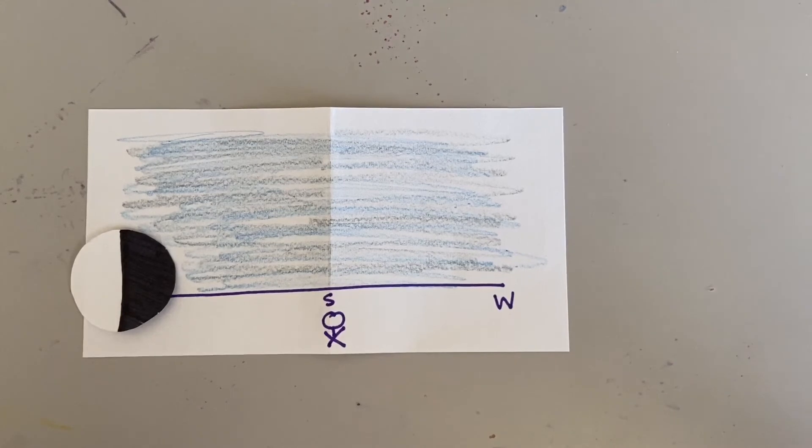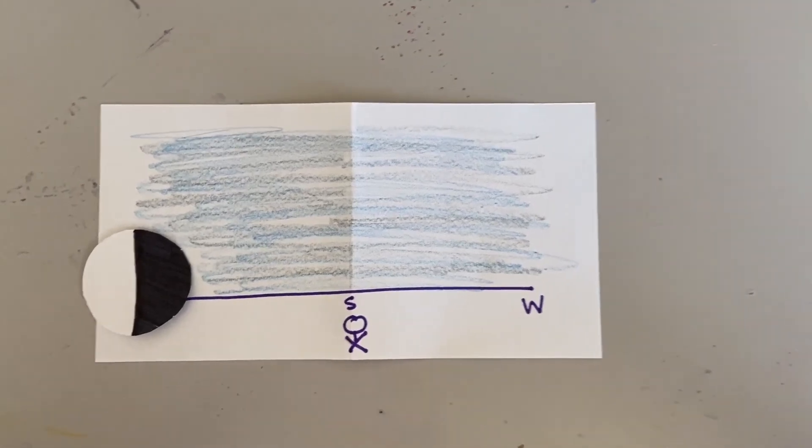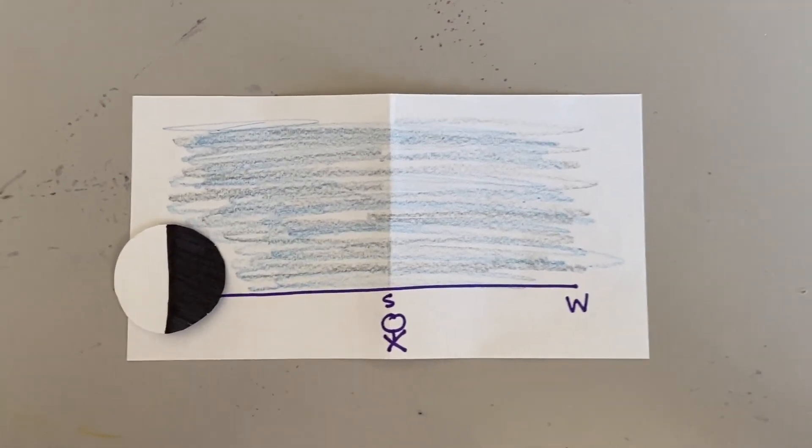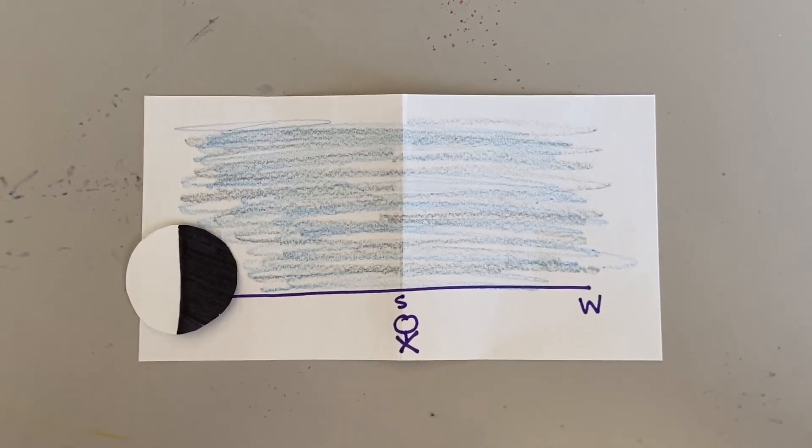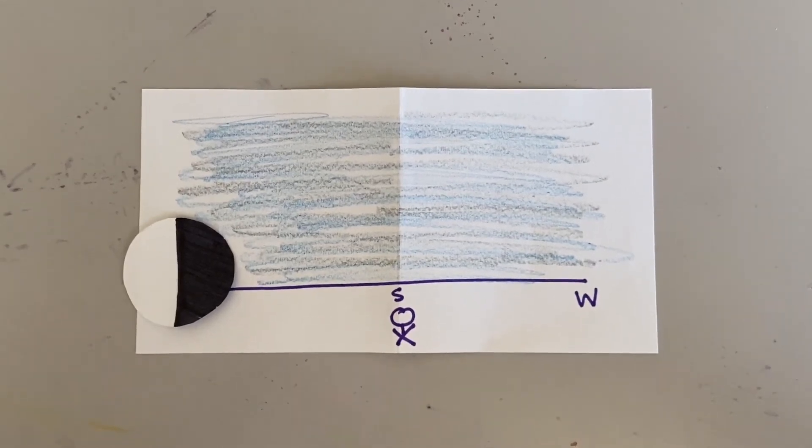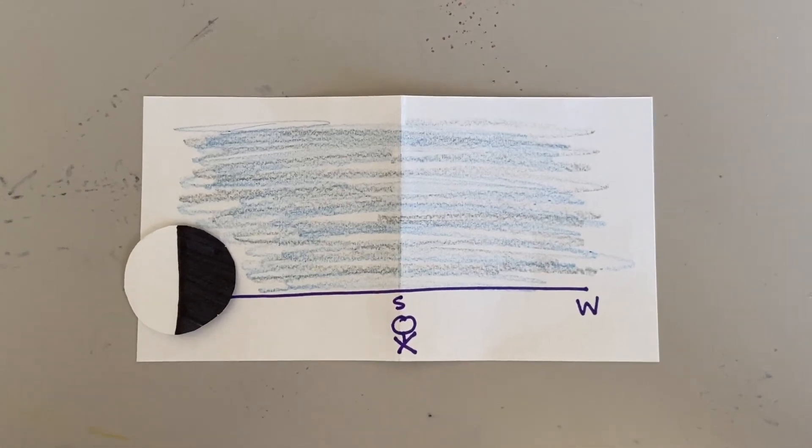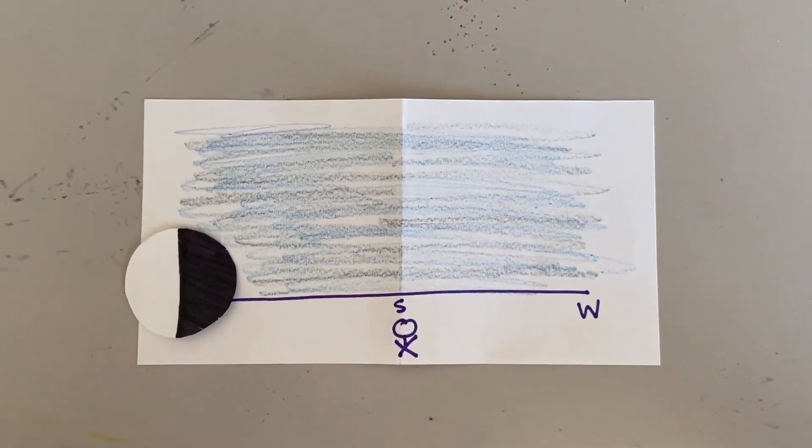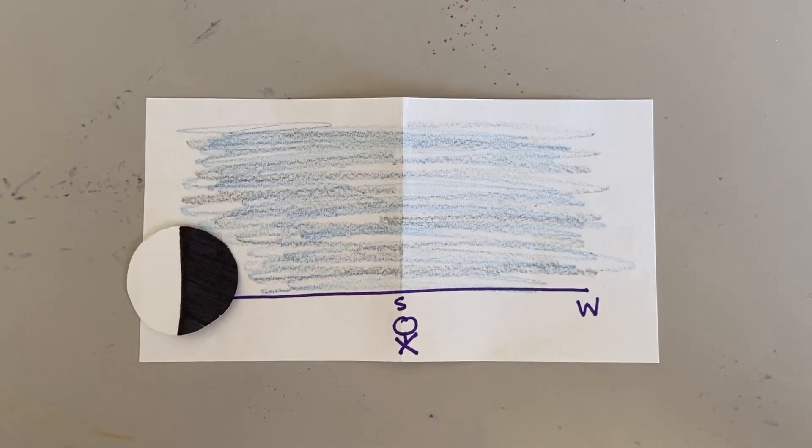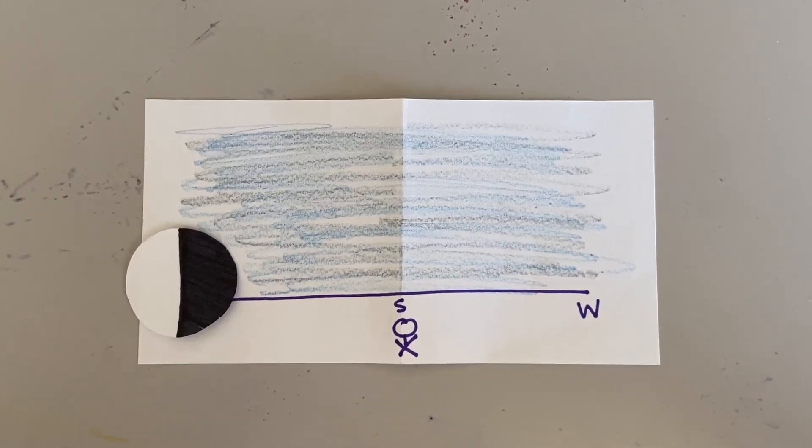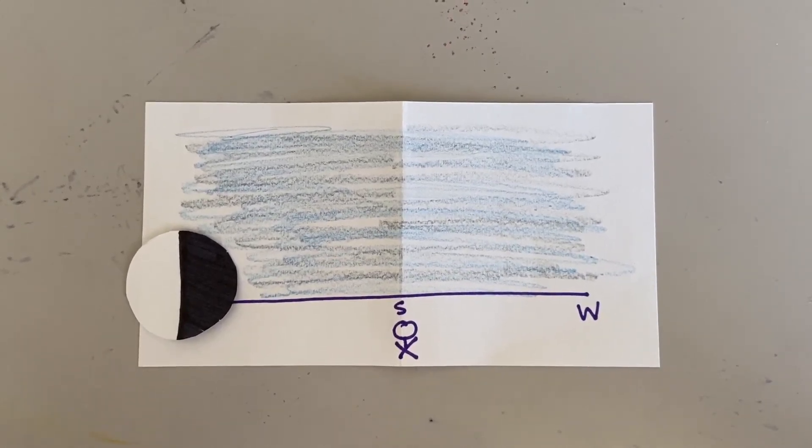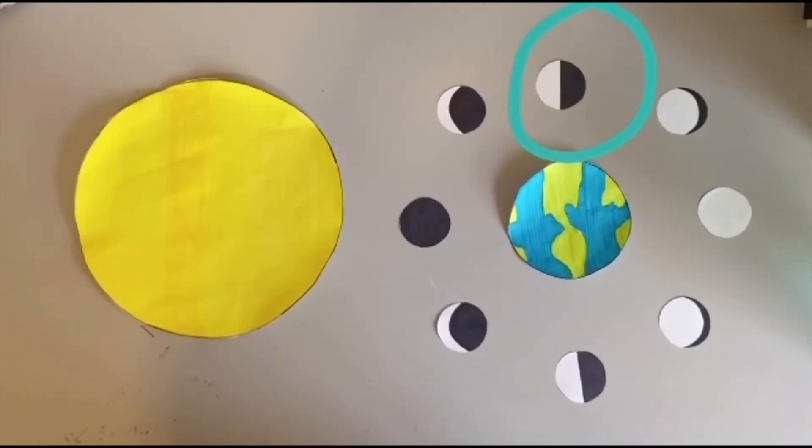Our last example is what time is it when this moon phase is rising from the eastern horizon. First, we start off with what phase is this moon in? We can tell because the light is on the left side of the moon that it is in one of the waning phases, and since it is split right down the middle, it is one of the quarter moons, so that means it must be the third quarter phase.